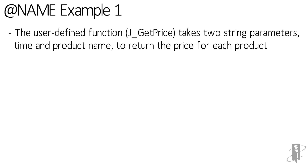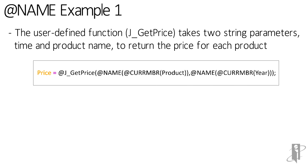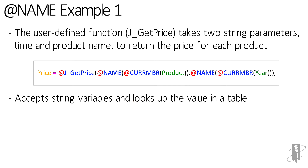For our first example, we have a user-defined function used to retrieve price from a table. The user-defined function takes two string parameters — time and product name — to return the price for each product. Our formula looks like: Price = @jgetprice, which accepts the name of the current member of Product and the name of the current member of the Year dimension. The user-defined function accepts string variables and looks up the value in the table.